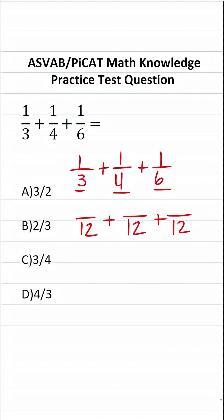To write 3 as 12, we would multiply it by 4. We also have to do that to its numerator. 3 times 4 is 12, and 1 times 4 is 4. So 1/3 is the same thing as 4 over 12. To write 4 as 12, we would have to multiply it by 3. We're also going to do that to its numerator — 4 times 3 is 12.